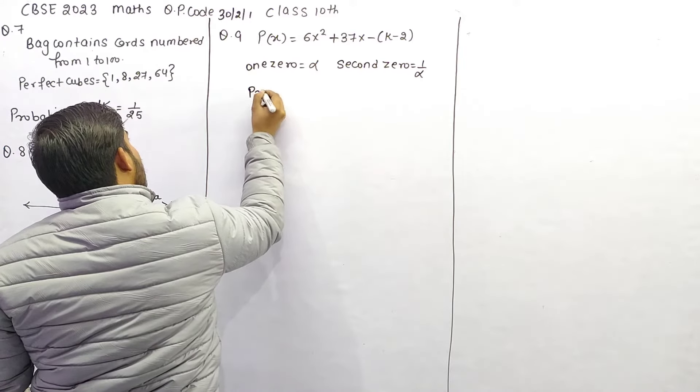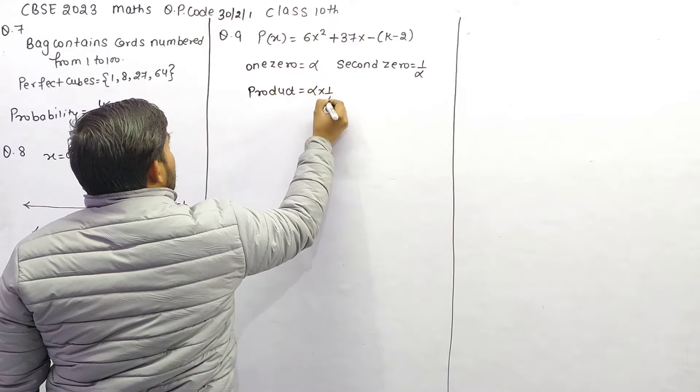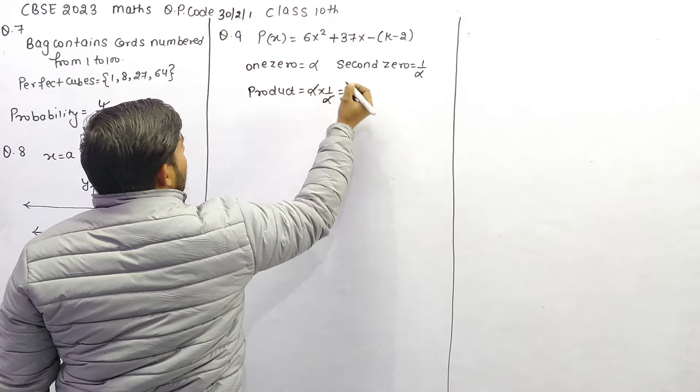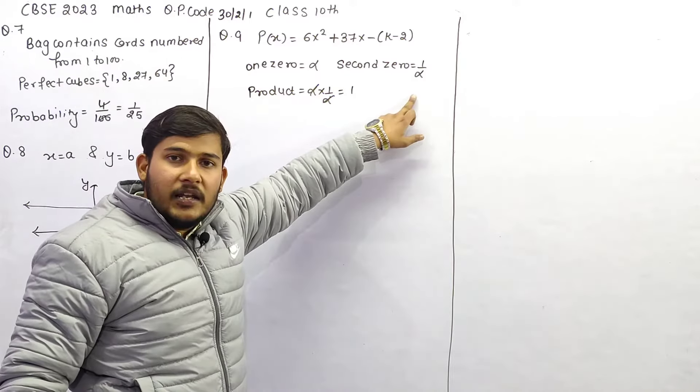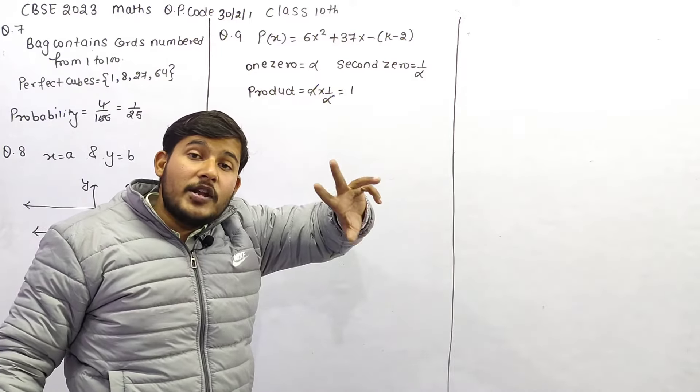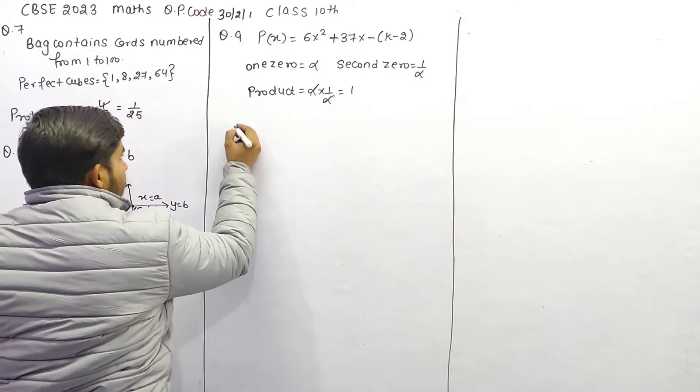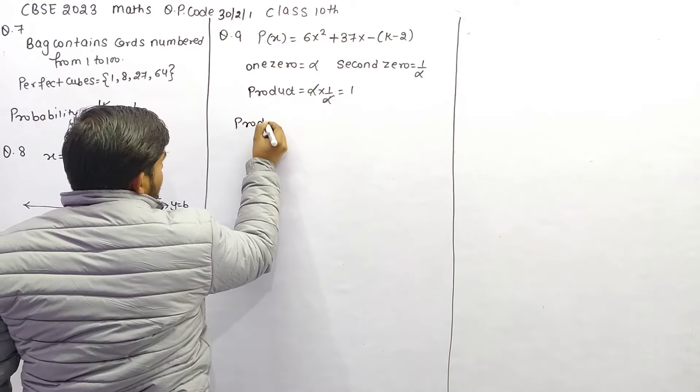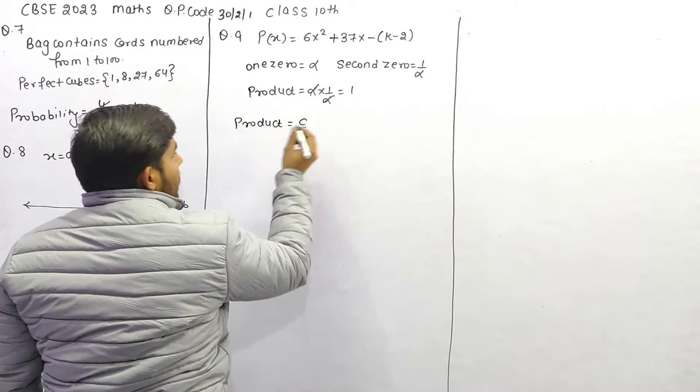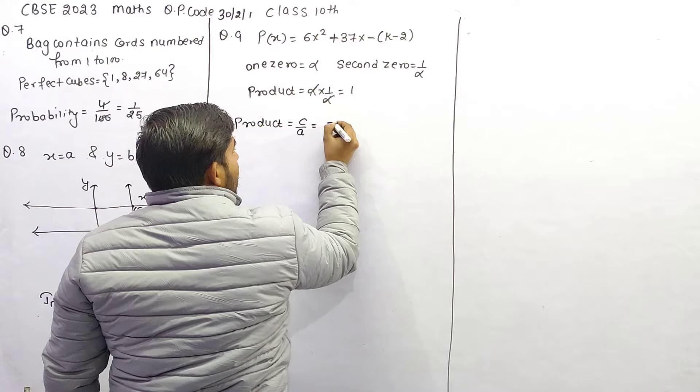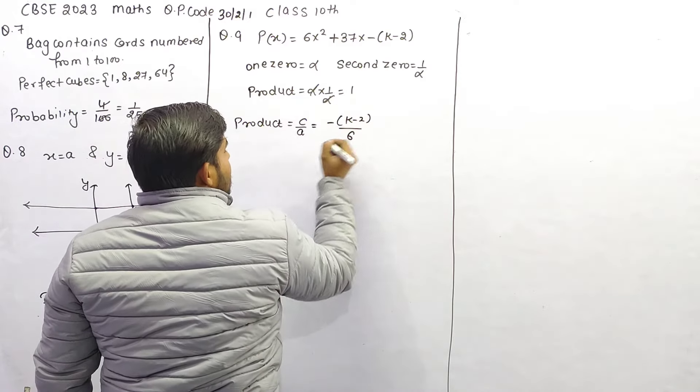तो हम ध्यान से देखें, तो जब हम दोनों zeros का product निकालेंगे, तो product कितना आ गया? एक तो product हमने ऐसे निकाल लिया, और एक product हम generalized formula से निकाल सकते हैं, product किसके बराबर होता है? product होता है C upon A, C क्या है हमारा? minus K minus 2, A क्या है हमारा? 6,